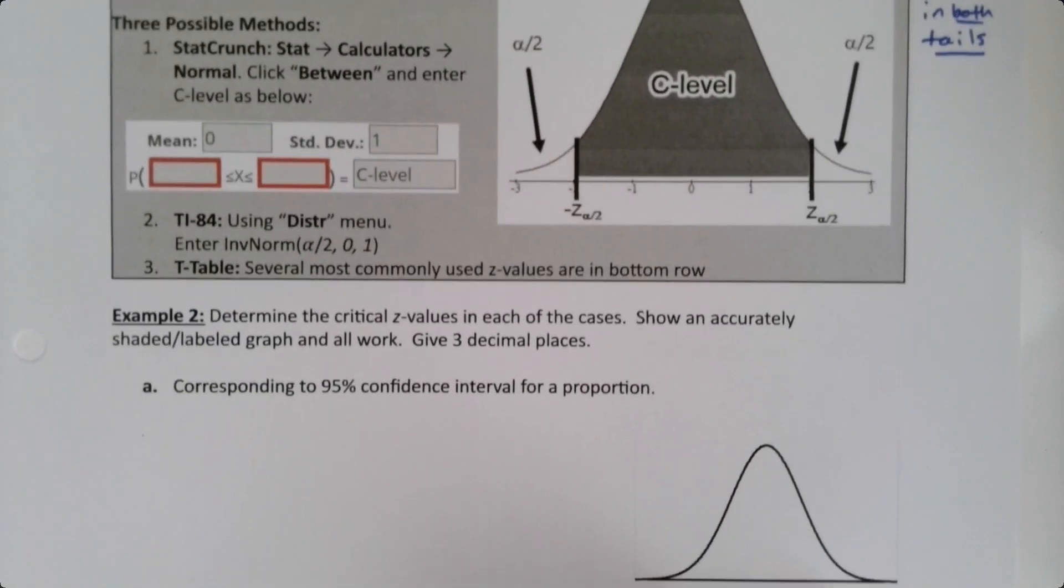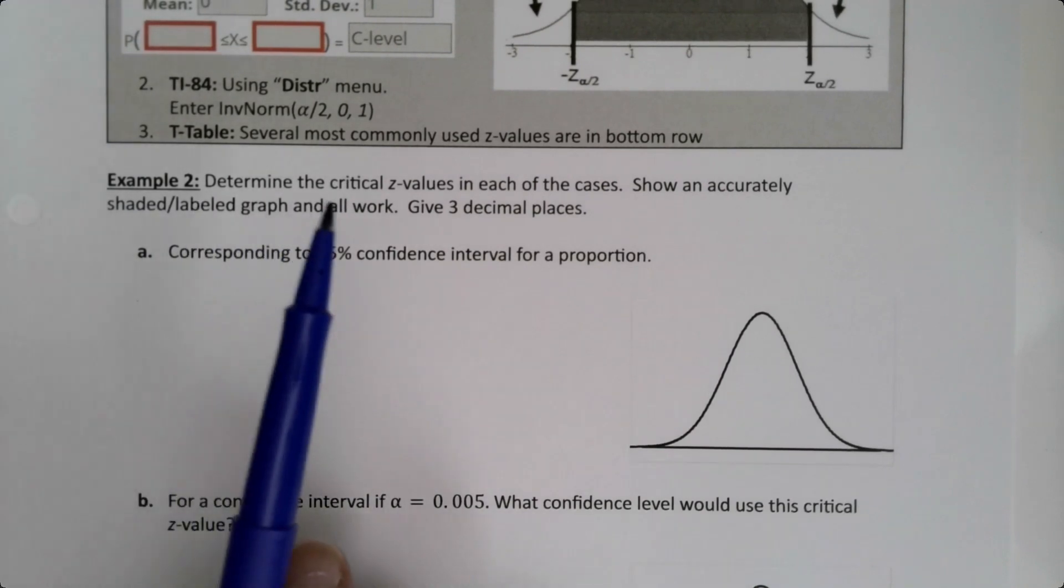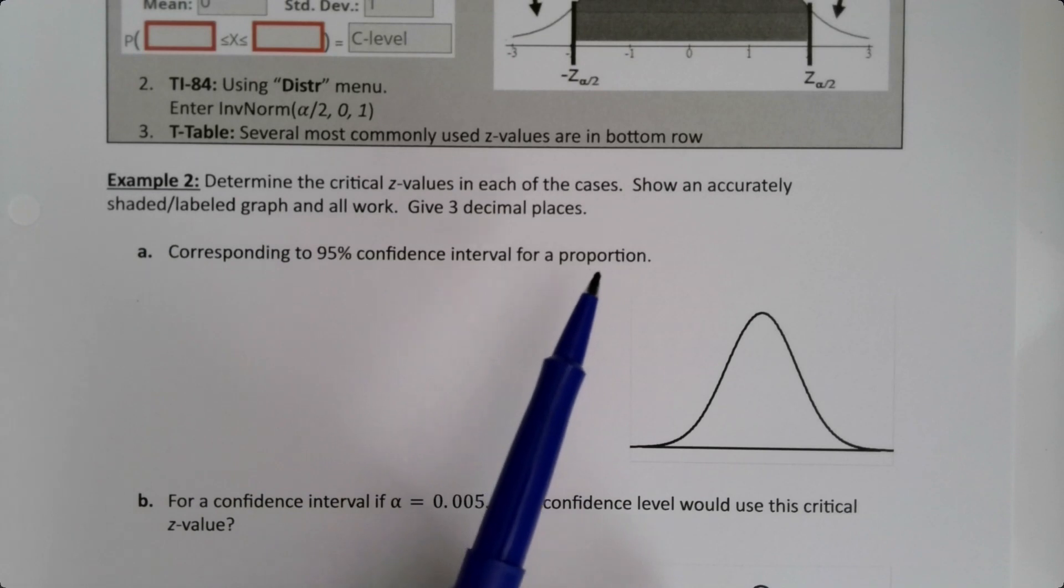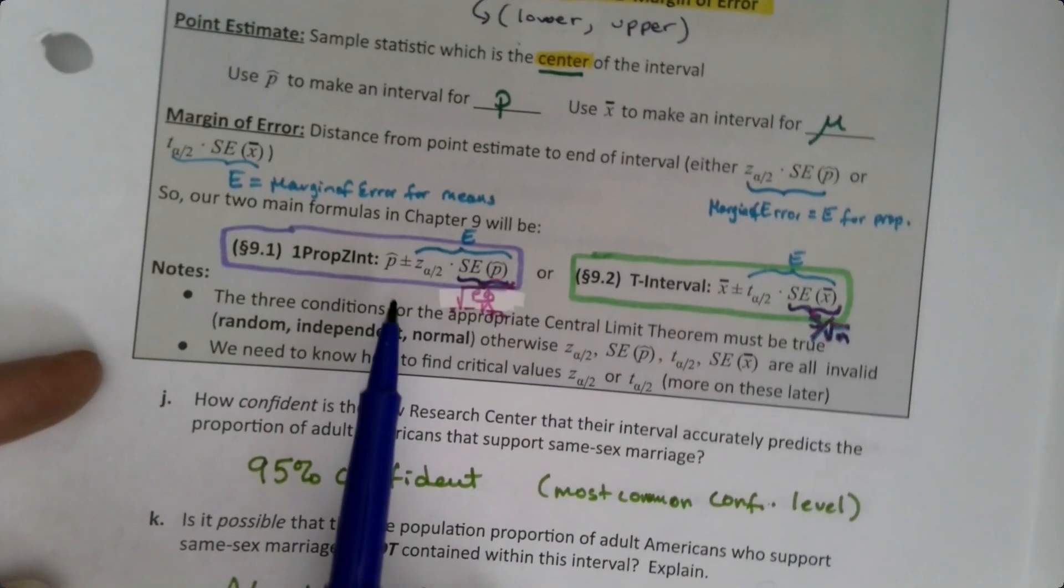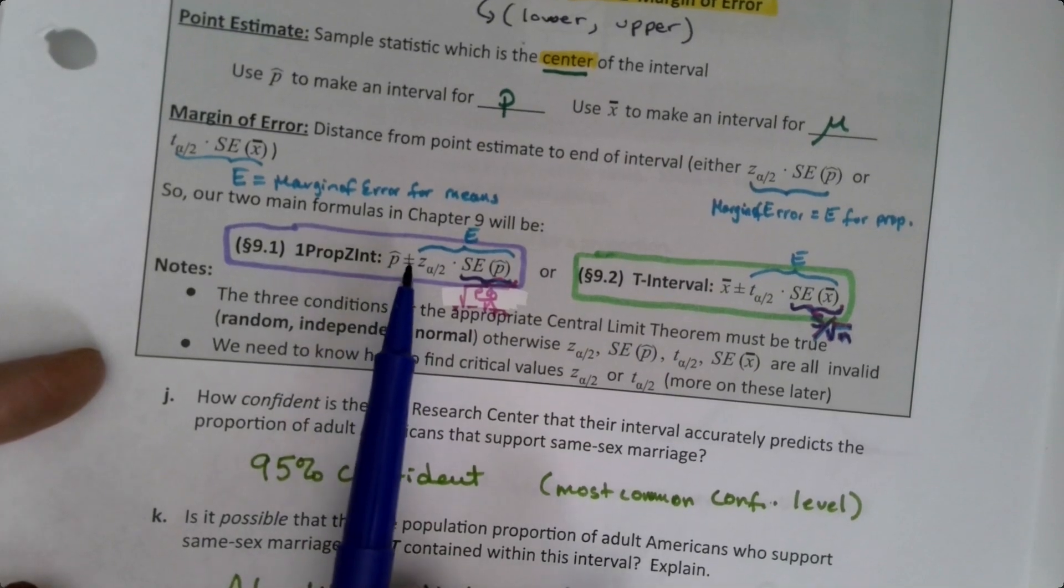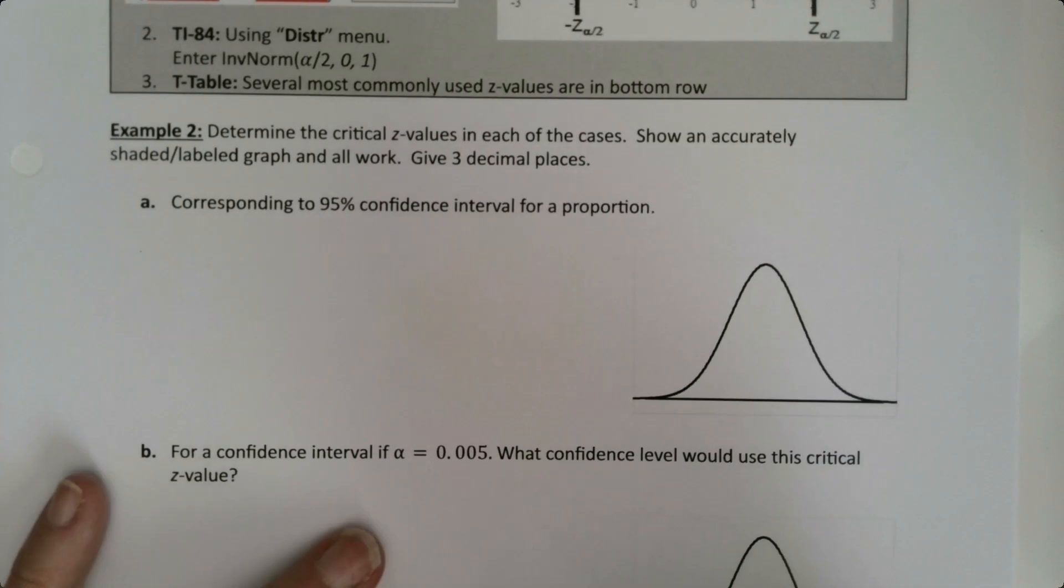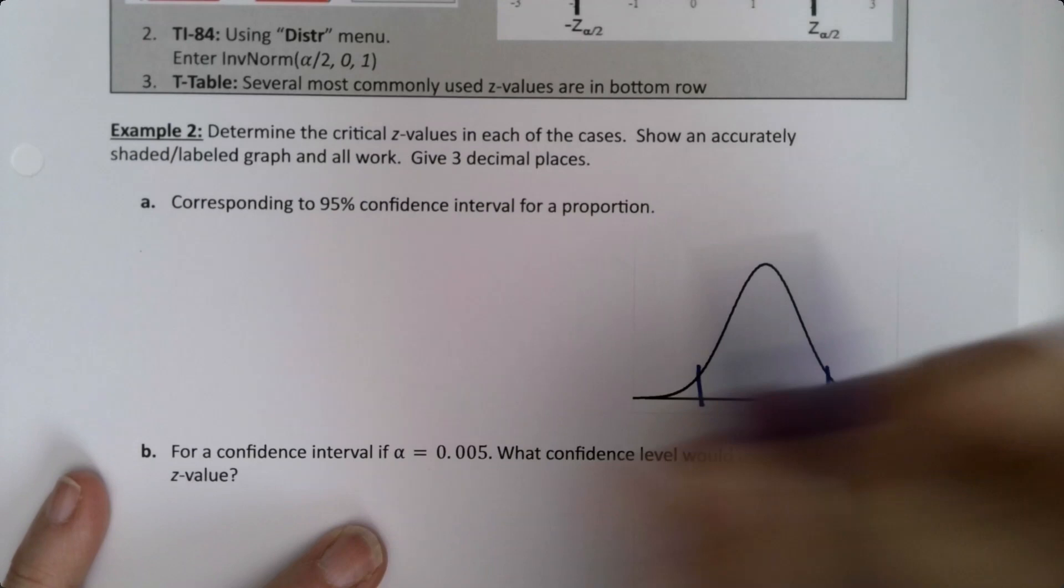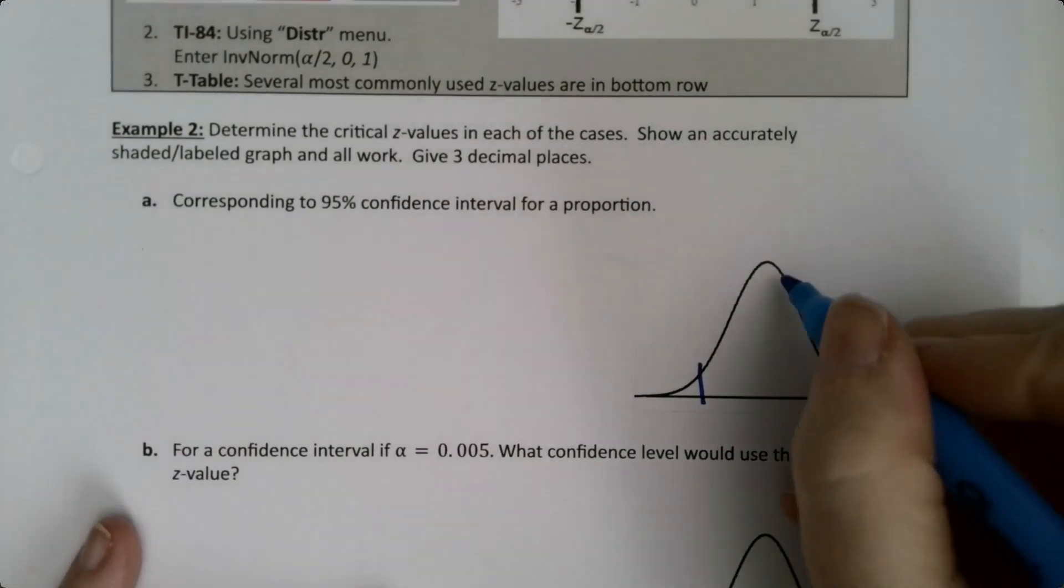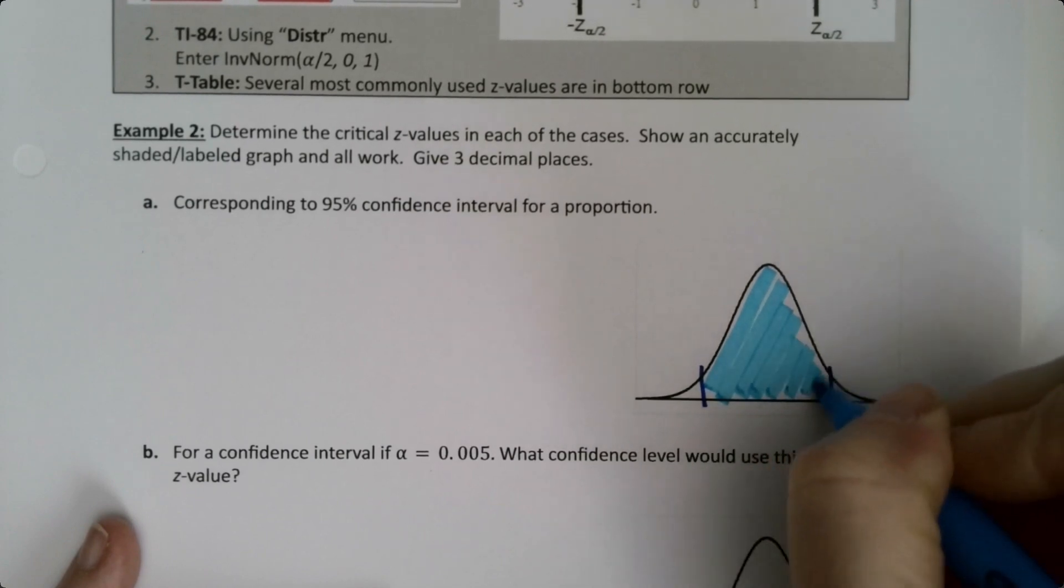All right, now let's actually put this together to find a value. So we're going to determine the critical values in each of these cases. So the first thing we have is a 95% confidence interval for a proportion, which is good because the proportion one is the one that uses the z. So that's the one we want. Okay, well, this is going to be pretty easy because I just kind of drew that picture above. I shade the middle and let me grab a highlighter. So that central portion is 95% and I'm going to label it as such.